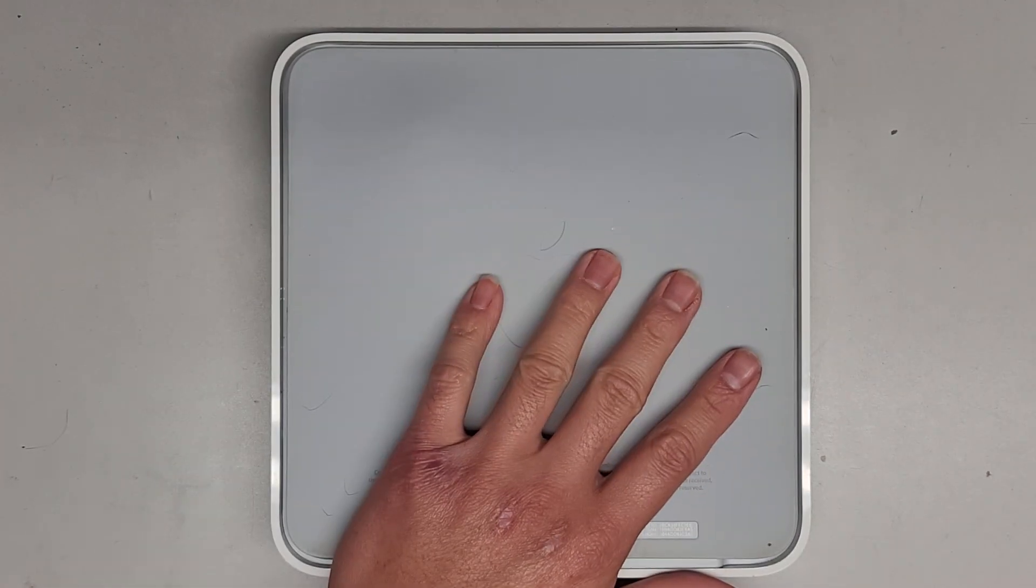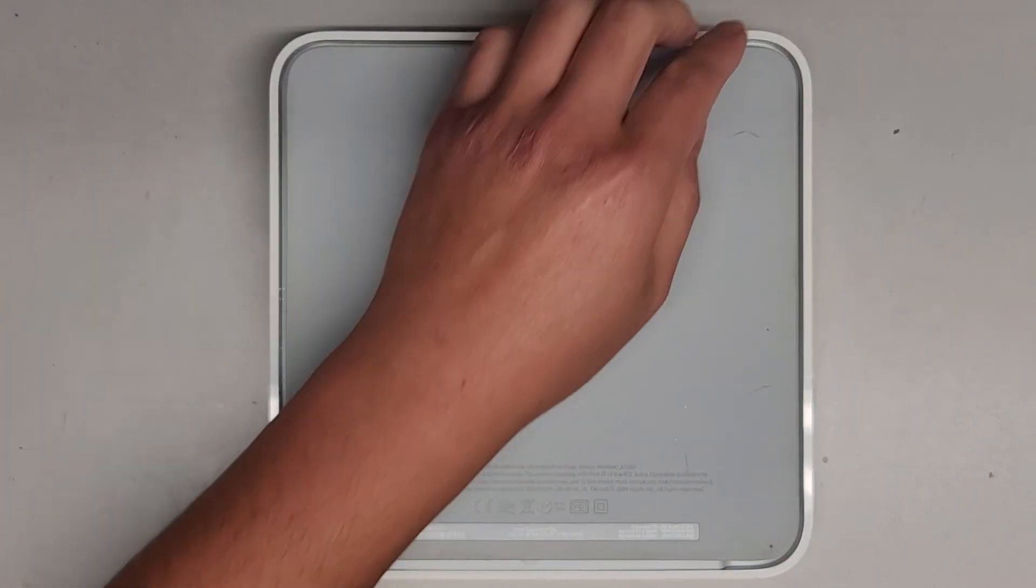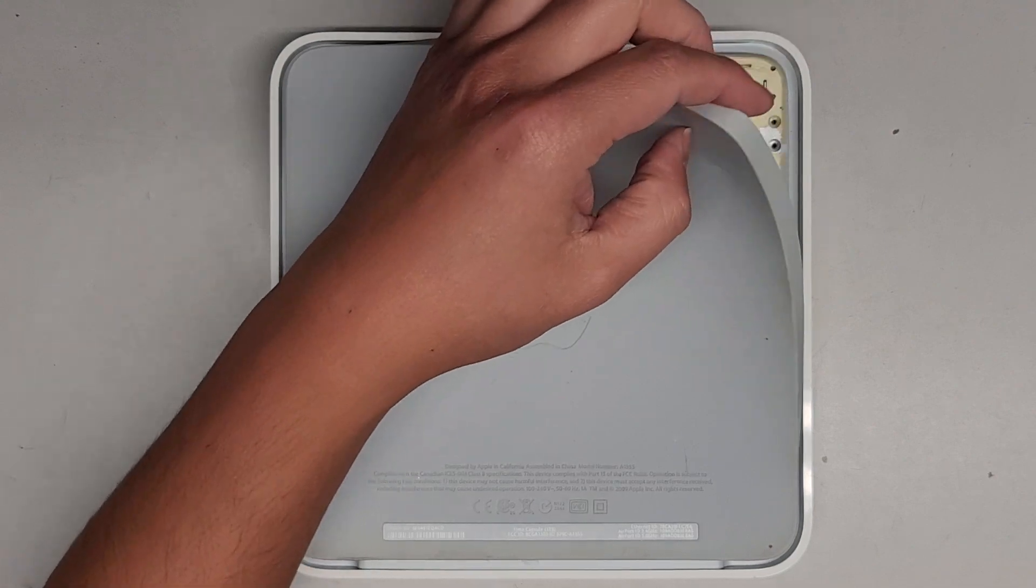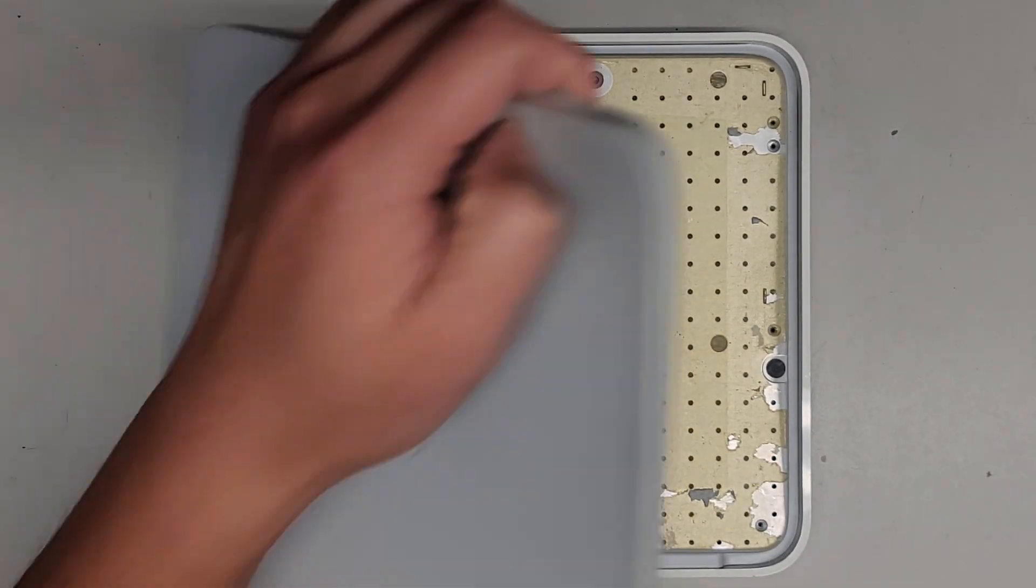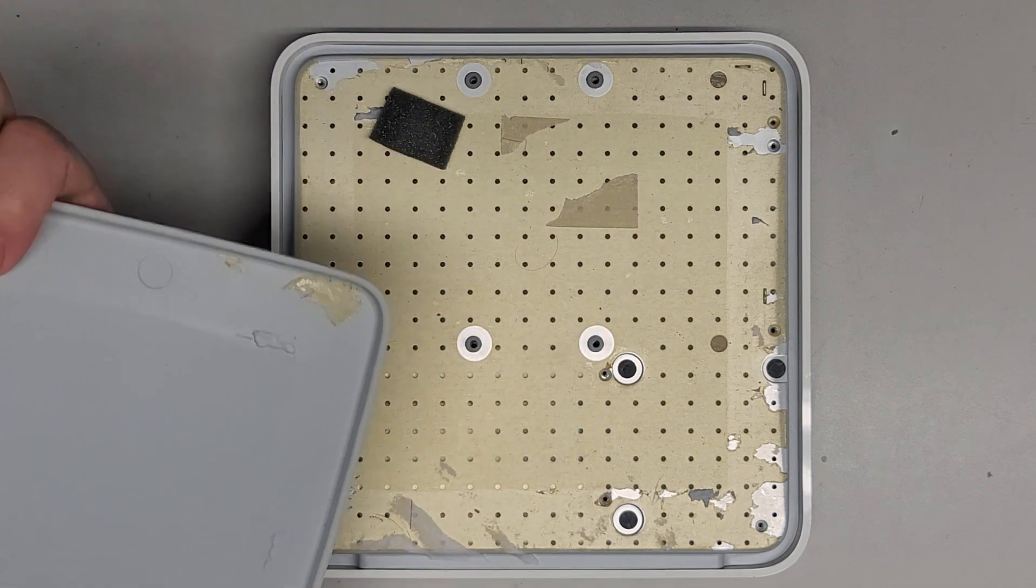Okay, so first thing, the customer already kind of had this stuff torn out, but you want to remove this rubber piece. It helps if you use some heat, but basically you would peel this rubber piece out from here.